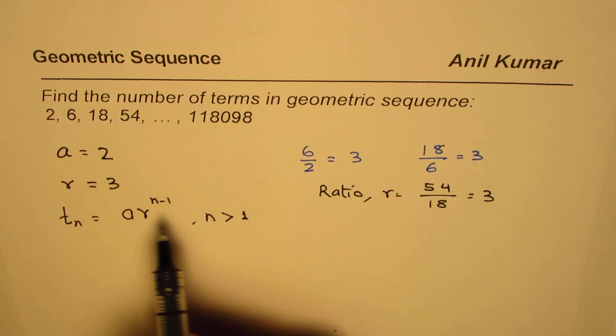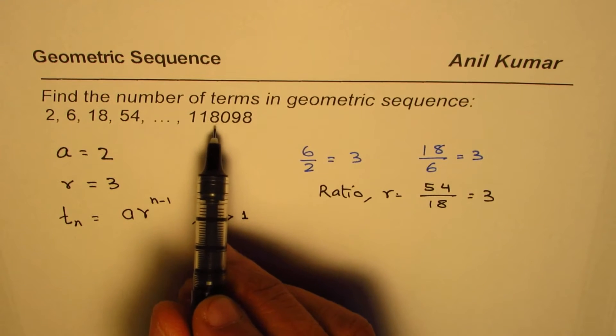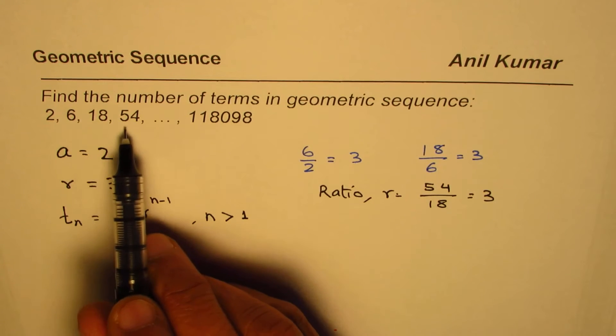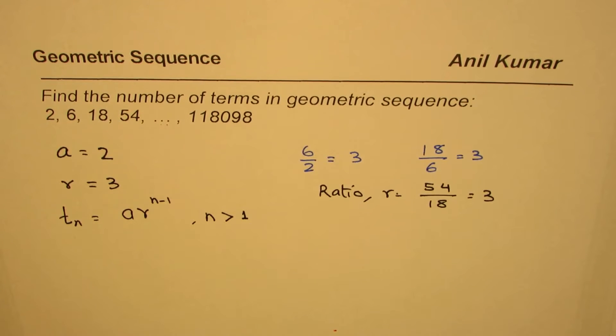So every next term is multiplied by r. Now the idea is we have to find the last term, we don't know what that number is. We know this is first, second, third, fourth, and this we don't know. What we know is the formula, the nth term is a times r to the power of n minus 1.